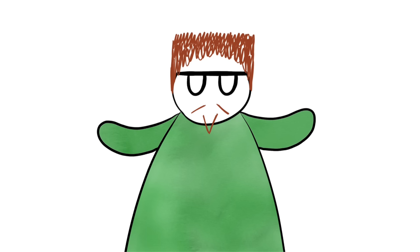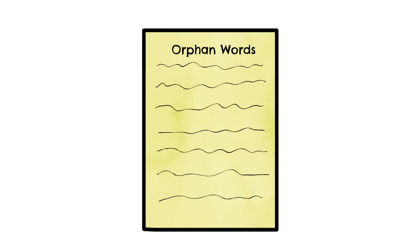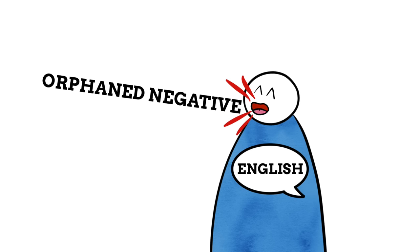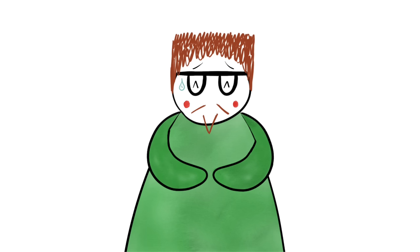Yet the orphans we are looking into today are not people who changed the world, starred in musicals, or even superheroes, but instead a set of specific words. It turns out that words, like people, can become orphans too. These orphaned words are called orphaned negatives, also known as unpaired words. It's highly likely you've used an orphaned negative at some point in your life, especially if you speak English. This video is primarily focusing on English, as orphaned negatives in other languages couldn't be found — but if you know of any, please let me know.